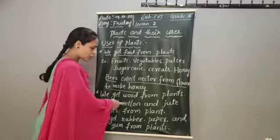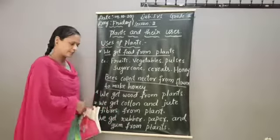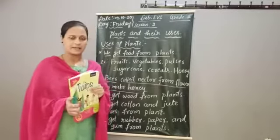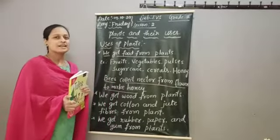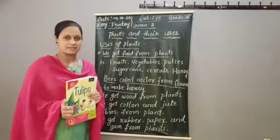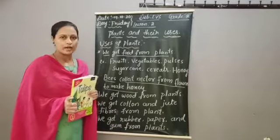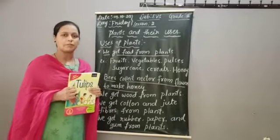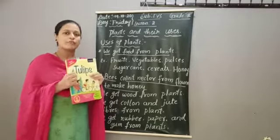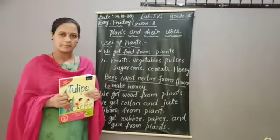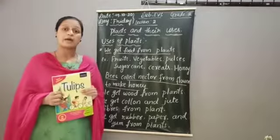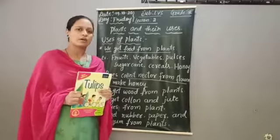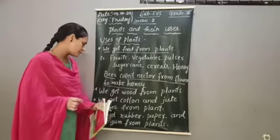Next point: we get cotton and jute fibers from plants. Cotton — in Kannada we call it 'hathi' — is used to make dresses, bedsheets, and bed covers. Jute fibers come from the hemp plant, and from jute fibers we make bags, mats, and ropes.